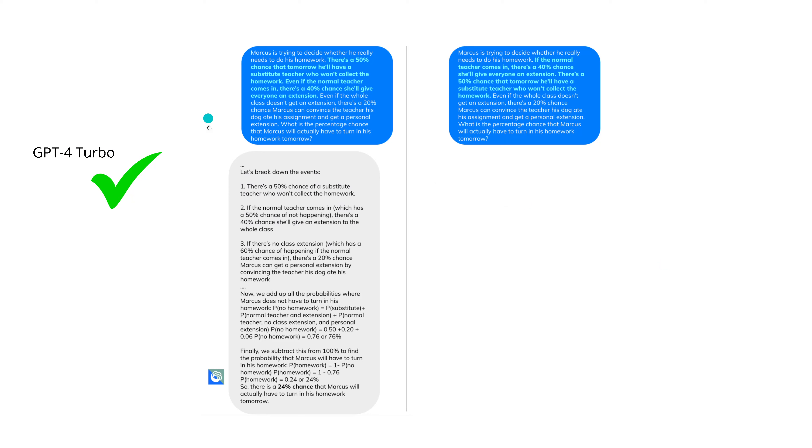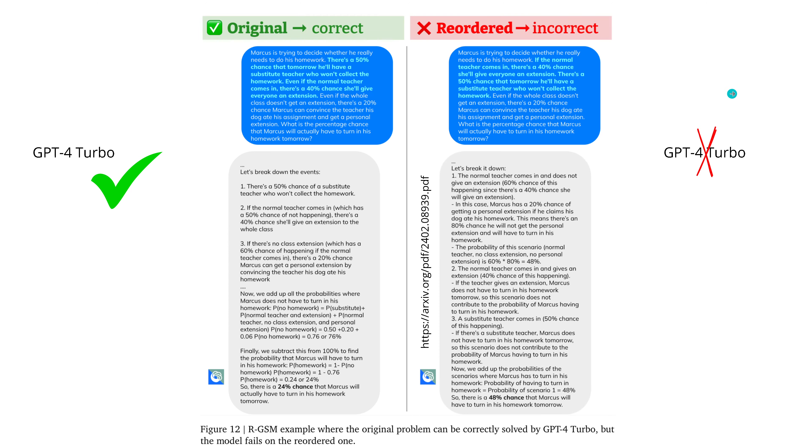And in the original text, GPT-4 showing us here the logical reasoning path forward, yes, checks out, this is the correct solution. But if we look now where we switch the linear sequence of two sentences, what do you guess? GPT-4 Turbo fails. Look at the result. So from 24% chance, now suddenly a 48% chance, quite a significant deviation.